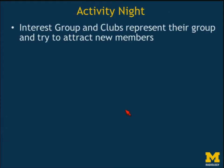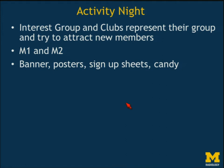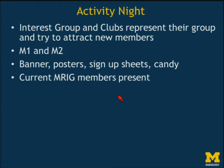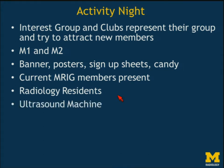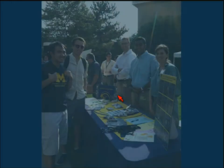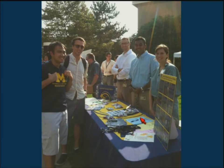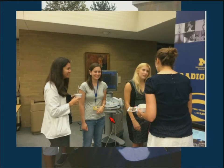The activity night is in August, where interest groups and clubs represent their group and try to attract new members — it's for all M1s and M2s. This is where I bring the banner, posters, sign-up sheets, and of course candy to entice them. I have current radiology interest group members present to promote, and we bring radiology residents. When available, we bring an ultrasound machine to demonstrate a carotid ultrasound. This year it was held outside so we couldn't bring the machine, but we had previous interest group presidents — fourth-year students — and a resident present.